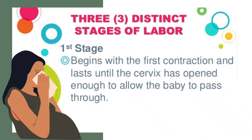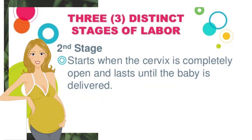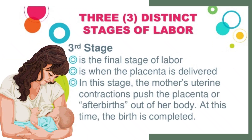There are three distinct stages of labor. The first stage begins with the first contraction and lasts until the cervix has opened enough to allow the baby to pass through. The second stage starts when the cervix is completely open and lasts until the baby is delivered. The third stage is the final stage of labor, when the placenta is delivered — the mother's uterine contractions push the placenta, or afterbirth, out of her body. At this point, the birth is completed.